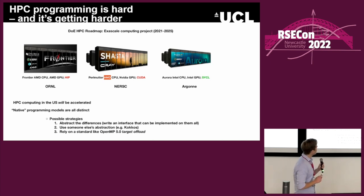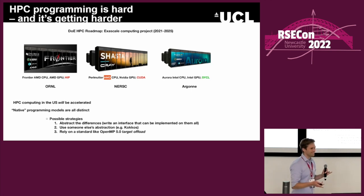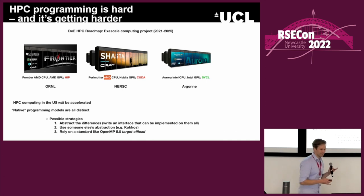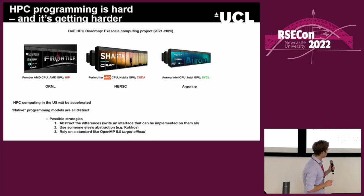As you can see highlighted here, what is the programming model? For AMD, use HIP. For NVIDIA, use CUDA. For Intel, use SYCL. So you're going to have to write your application three times if you want to use all of these things. They come up with possible strategies and you see a theme: abstract the differences, let someone else abstract the differences, or rely on a standard that abstracts the differences. So we want to use the GPUs but we don't want to think about them.